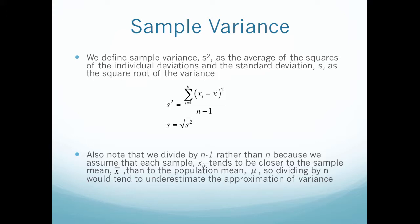Note that we divide by n minus 1 rather than just n because we assume that each sample x sub i tends to be closer to the sample mean, x bar, than the population mean, mu, so dividing by n would tend to underestimate the approximation of variance. In other words, the numerator will tend to be smaller in the sample variance than in the population variance, so we decrease the denominator to provide an approximate compensation.